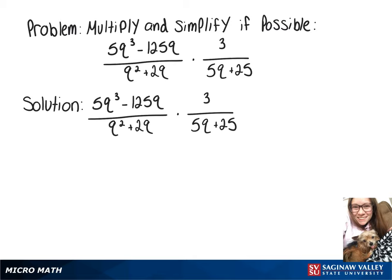In this video, we're going to multiply these expressions and simplify. So on top, we'll have 3 times 5q to the third minus 125q. On bottom, we have q squared plus 2q times 5q plus 25.